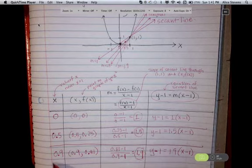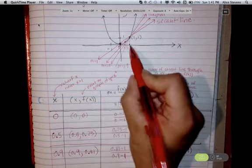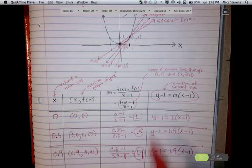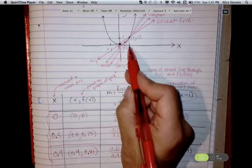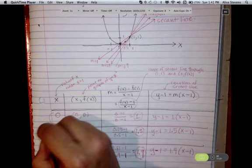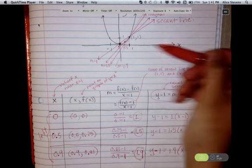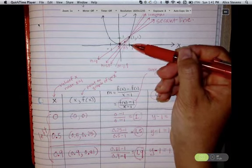I could take another value of x, for instance, 0.999. That's even closer to 1, and you can probably guess that this is going to get closer to 2. For all three of these, I've approached 1 from the left. But we could also approach 1 from the right and choose values on the right side of 1.